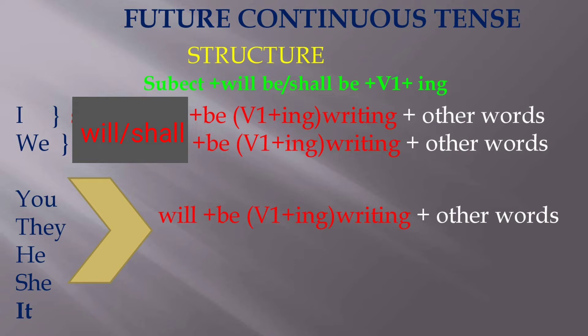So if we see the structure now, we can say: I shall be writing, we shall be writing, you will be writing, they will be writing, he will be writing, she will be writing, and it will be writing. This is the structure for the future continuous tense.